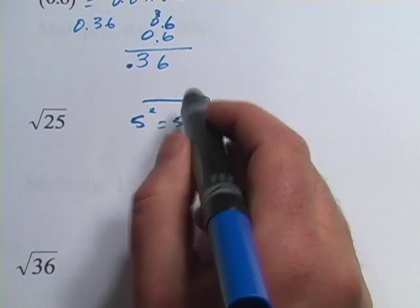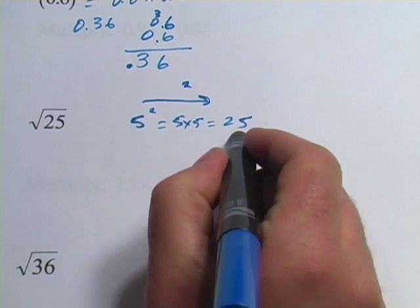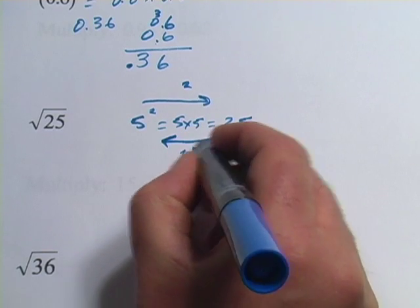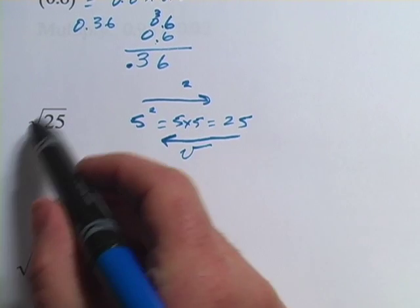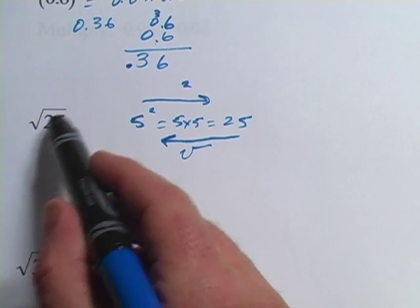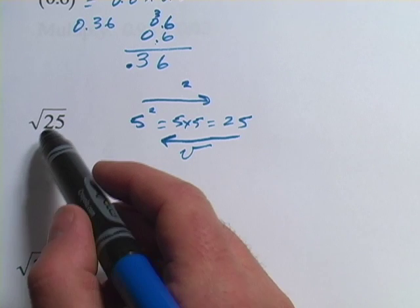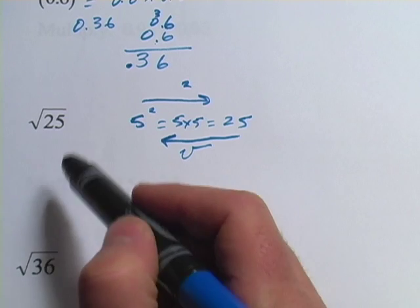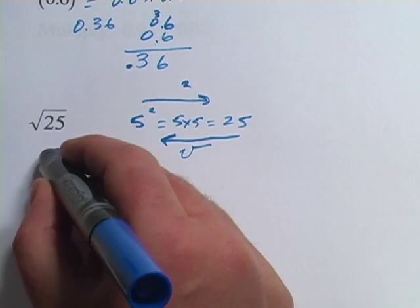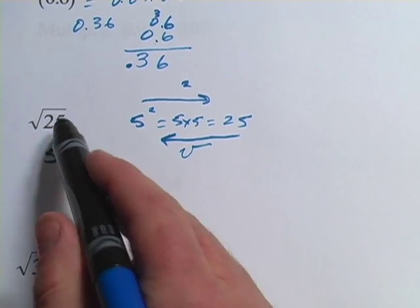So when you go this way, you're squaring. When you go this way, you're taking the square root. So the square root of 25 is going to be 5. So the square root really gives you the number that would multiply by itself to get whatever is underneath this sign. So the square root of 25 is 5 because 5 times 5 is 25.